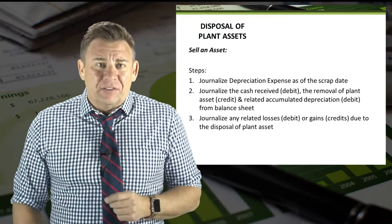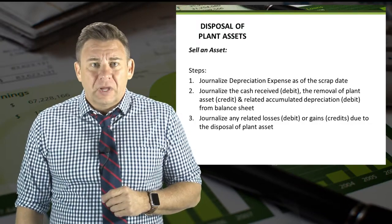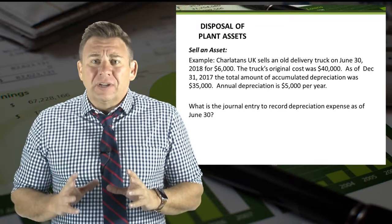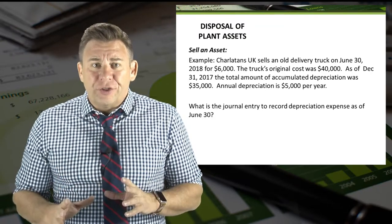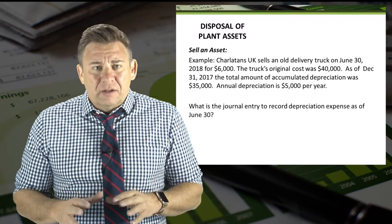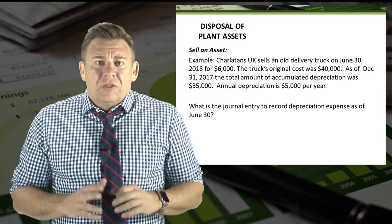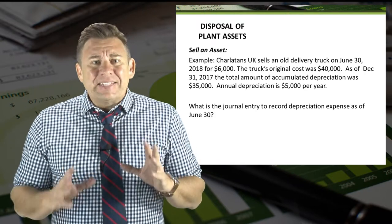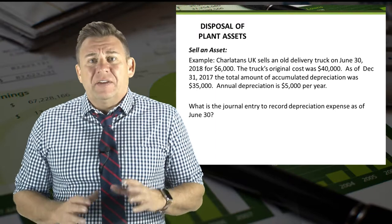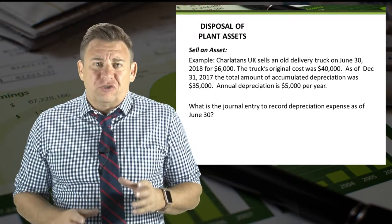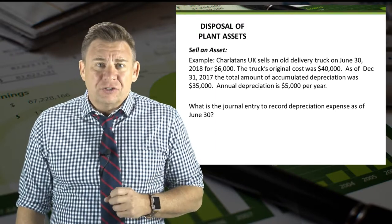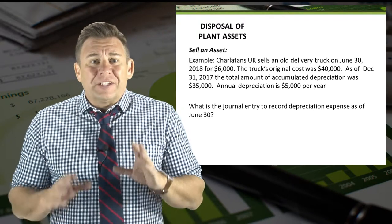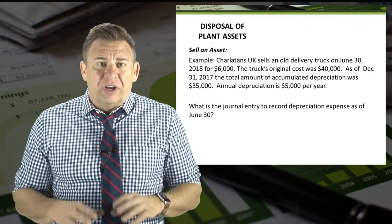Finally, we need to record the amount of cash we sold the asset for and any gain or loss related to the selling of the asset. Let's look at an example: Charlatans UK sells an old delivery truck on June 30th, 2018 for $6,000. The truck's original cost was $40,000. As of December 31st, 2017, the total accumulated depreciation was $35,000, and annual depreciation is $5,000 per year.